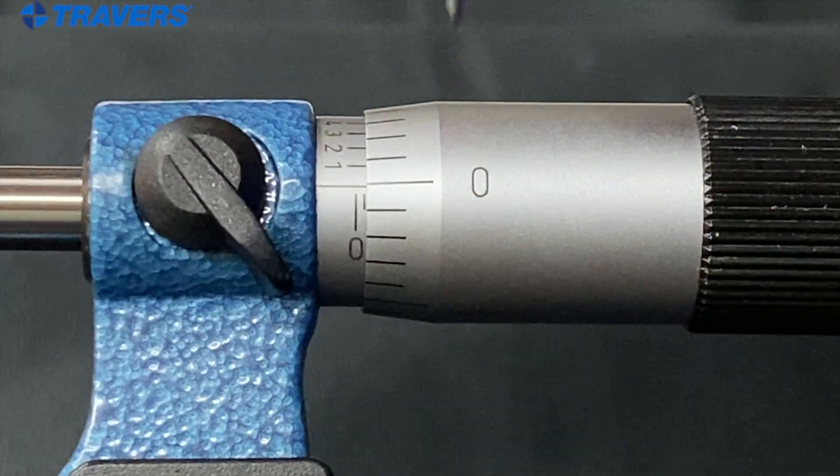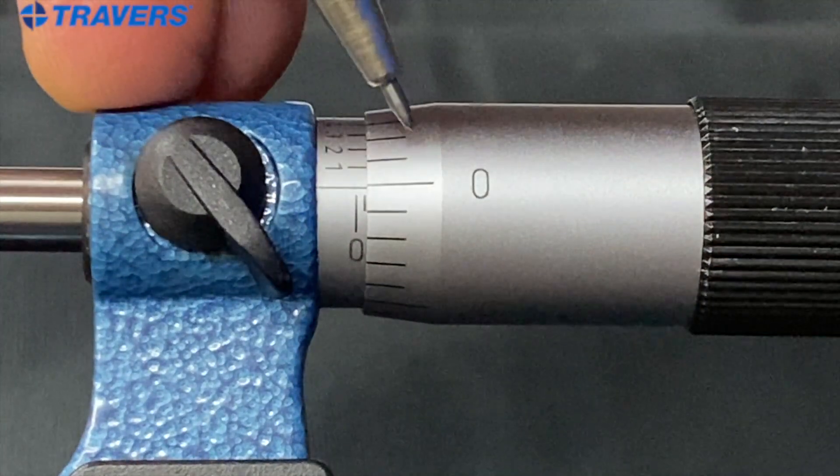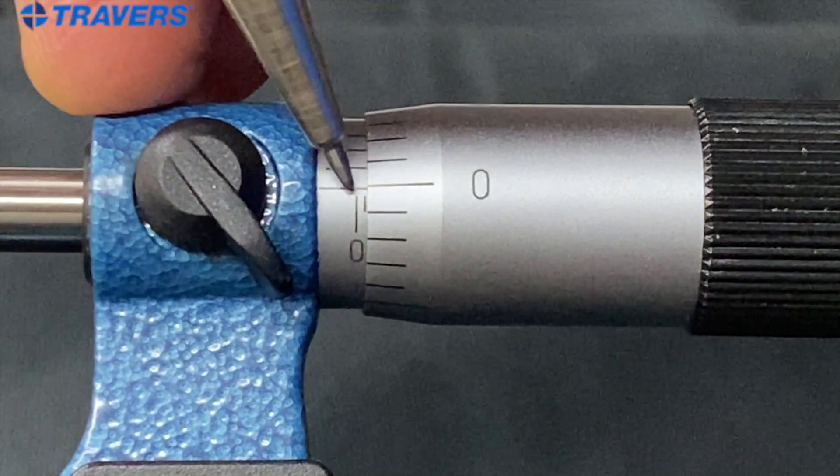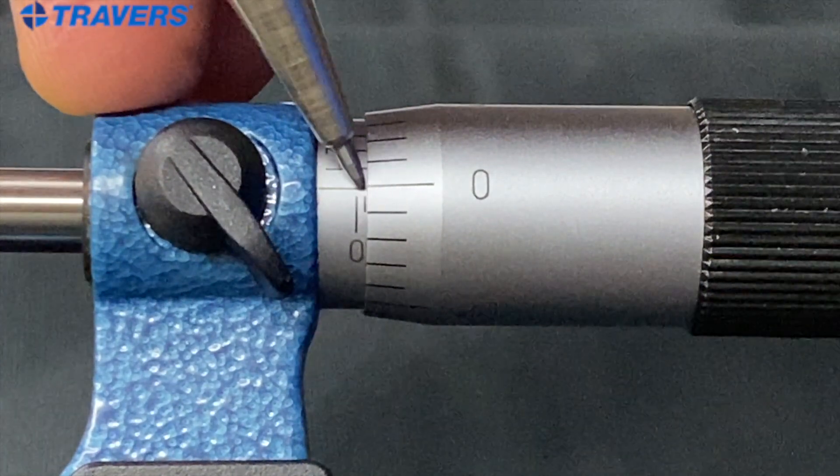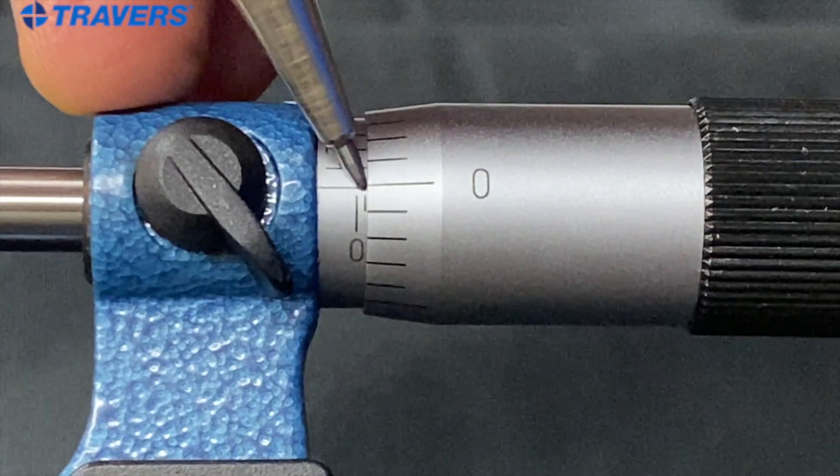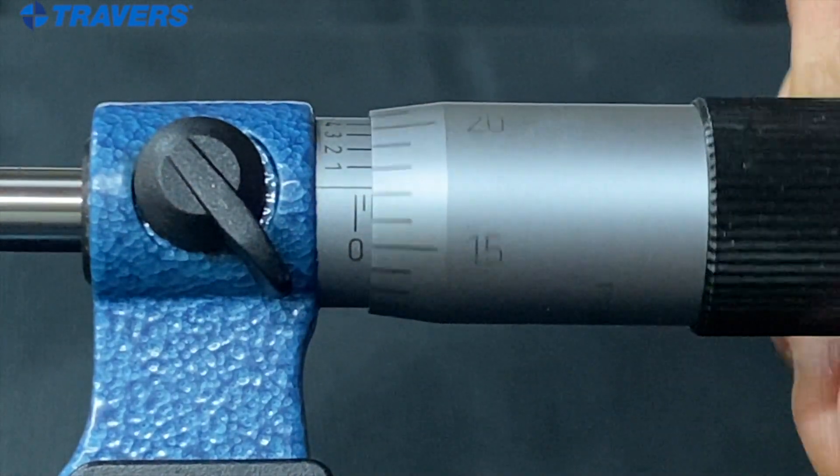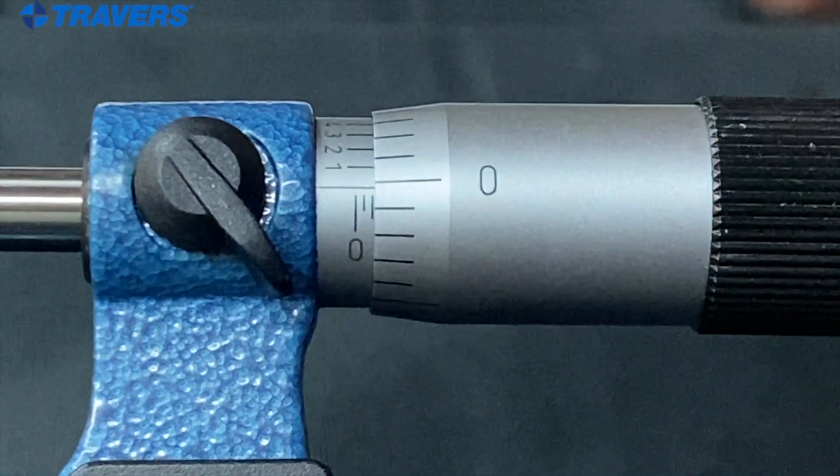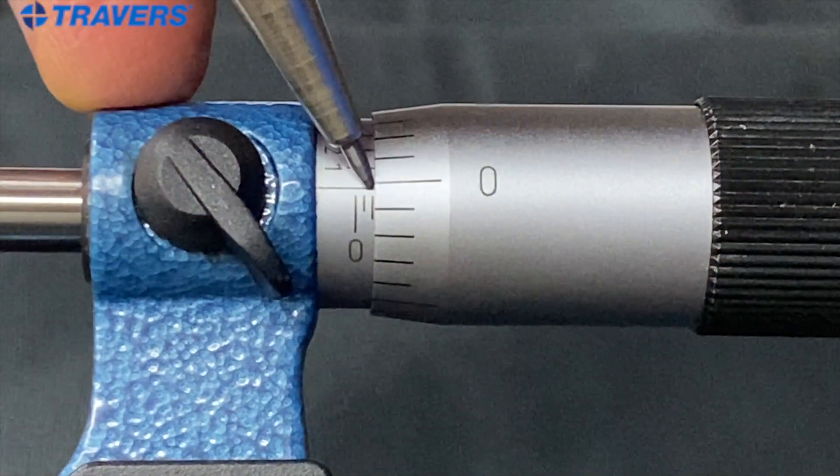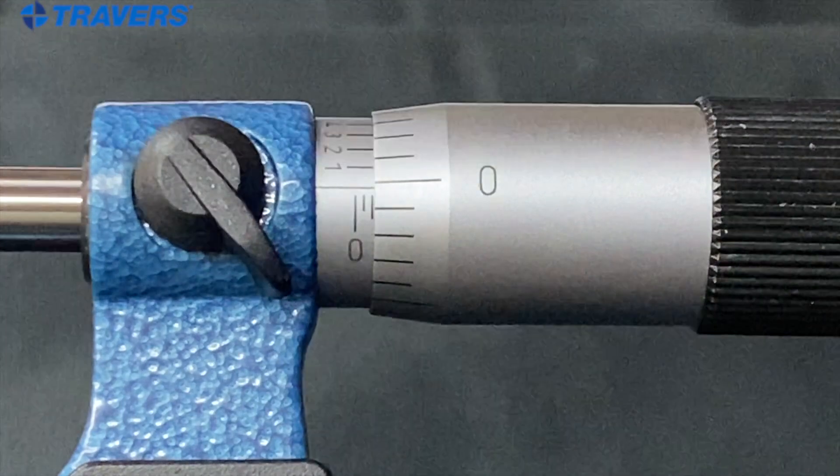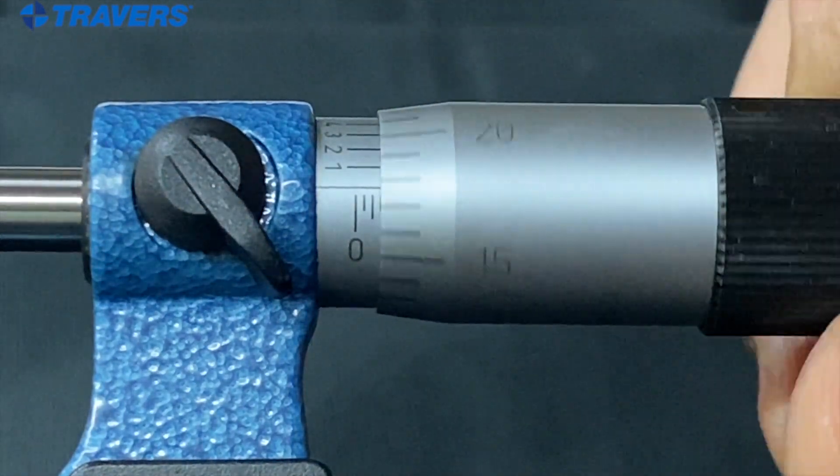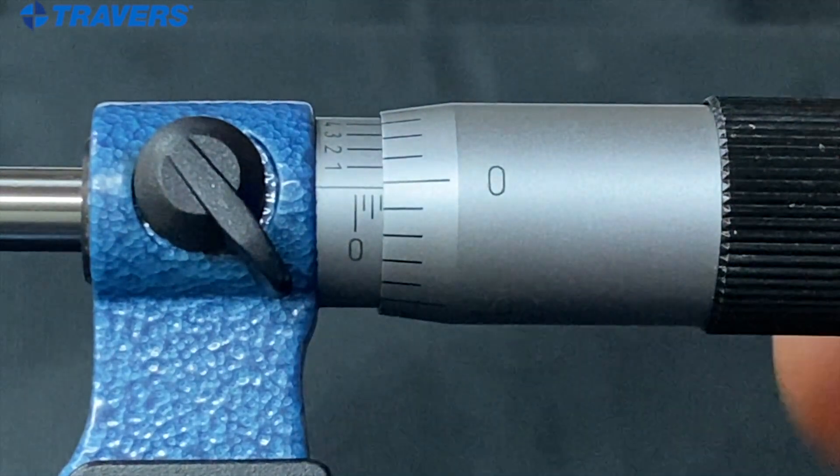So we know by the increments on the thimble that we went 25 thousandths. But we can also see right down in there that little line that tells us that we moved 25 thousandths. So one more revolution, you can see another line right down here. That means we moved 50 thousandths. Likewise, that's 75.